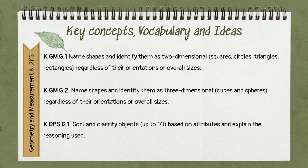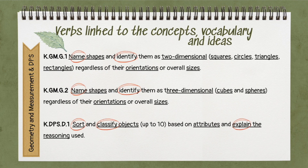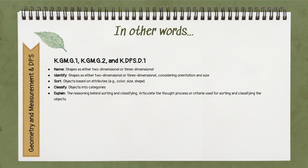Moving into geometry and measurement with data, probability, and statistics — we have geometry as the subcategory with two standards, and one standard for data, probability, and statistics with the data subcategory. Underlining key concepts, vocabulary, and ideas: name shapes that are two-dimensional — squares, circles, triangles, rectangles — and their orientation and size. Similarly with three-dimensional shapes — cubes, spheres — their orientation and size. For data: sort, classify, attributes, explain reasoning. Then we'll circle the verbs: name, identify, sort, classify, explain. In my own words, I described what students need to do with each verb — name, identify, sort, classify, and explain — and what they need to do with those actions.